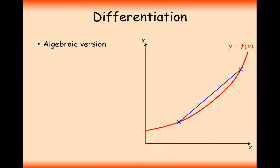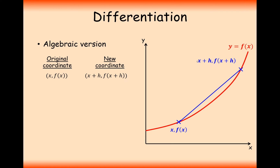What we're doing here is we're estimating the gradient so far. We'll select this coordinate down here as our starting coordinate — x — and the y coordinate will be f of x. And a coordinate up here that's going to be x plus h, so the original coordinate added on some small amount h, and then f of x plus h. Remember that you can work out the y coordinate just by plugging in the x coordinate into your function — that's why we're using f of x as the y coordinate.